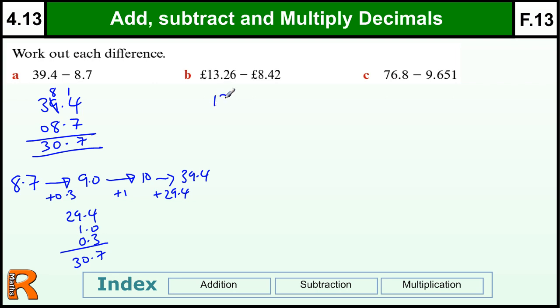OK, the next one is a money question, so 13.26 take away eight pounds forty-two. Six take away two is four, two take away four I can't do, so I need to borrow from the next column. To get a ten, to make twelve take away four is eight. Again, I can't do two take away eight, so I need to borrow from this column. Twelve take away eight is four, so four pound eighty-four.